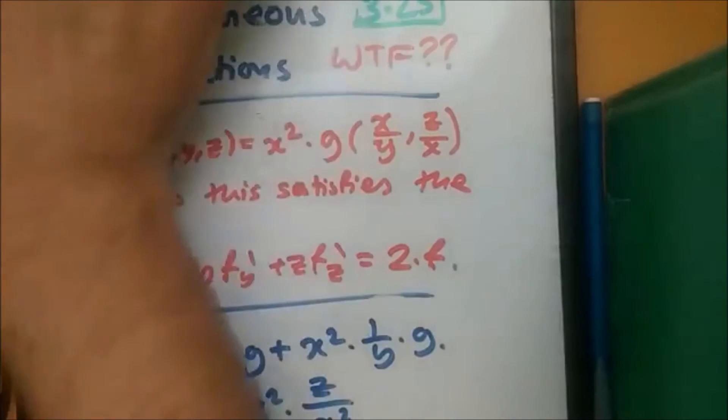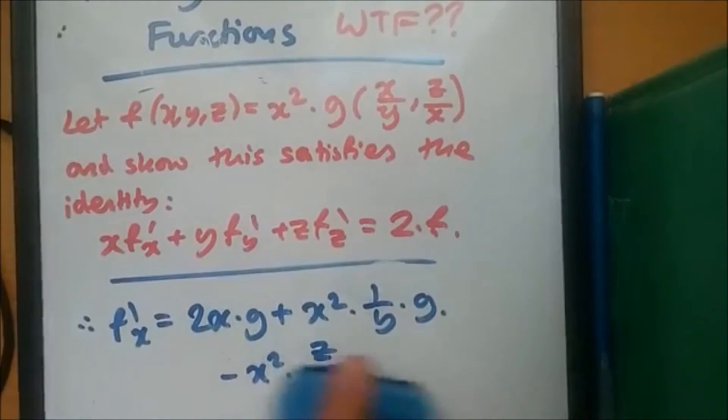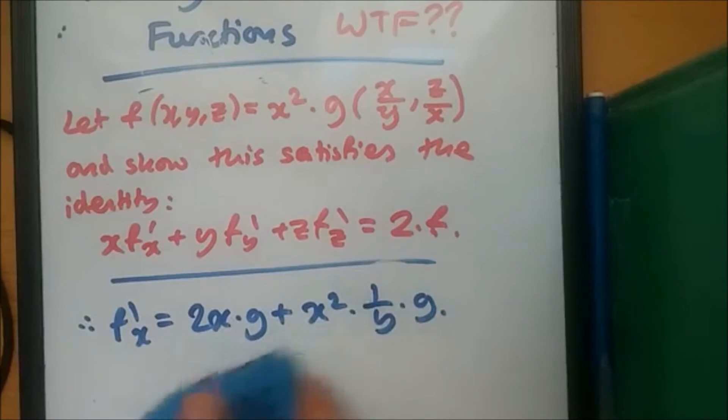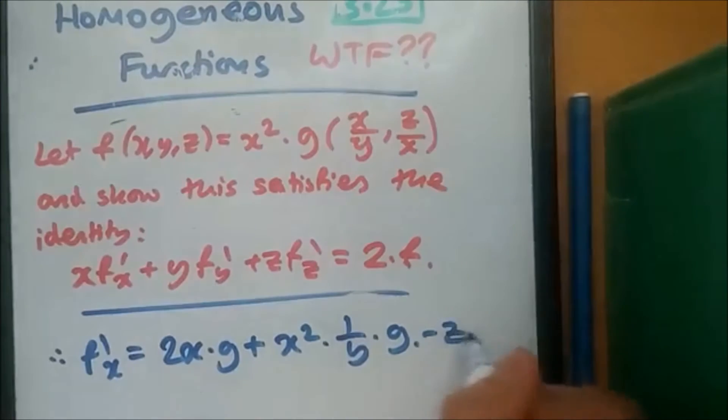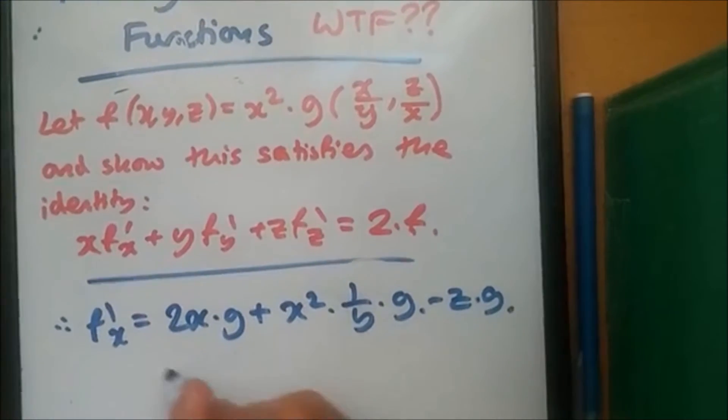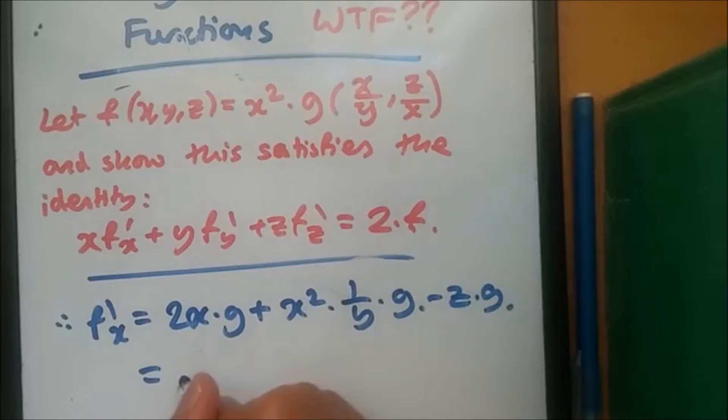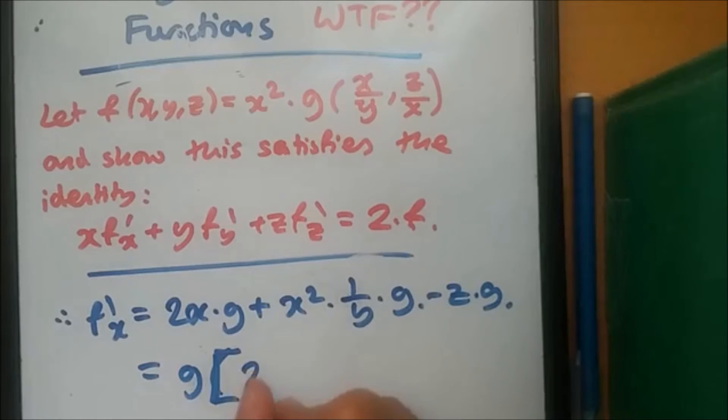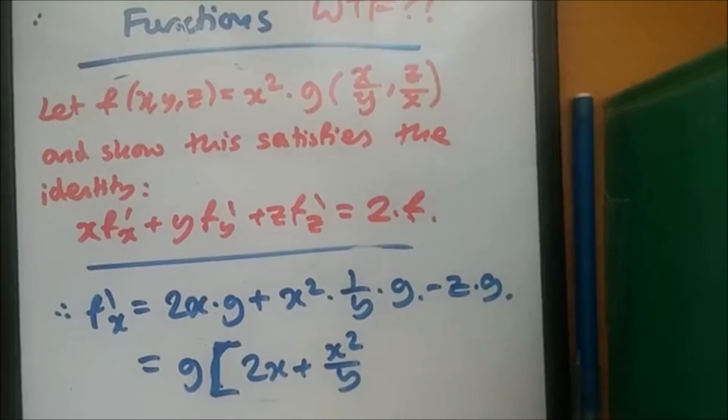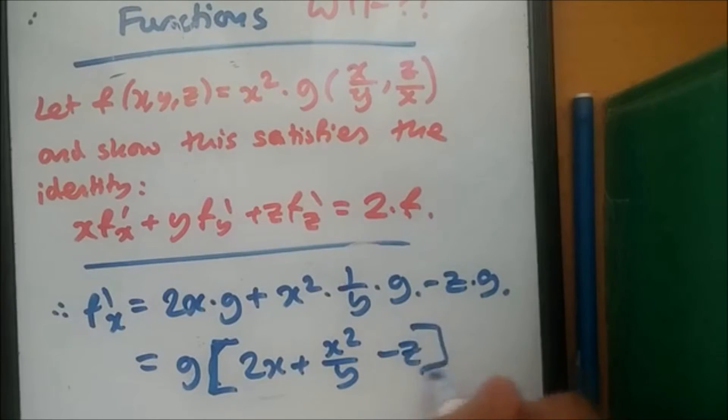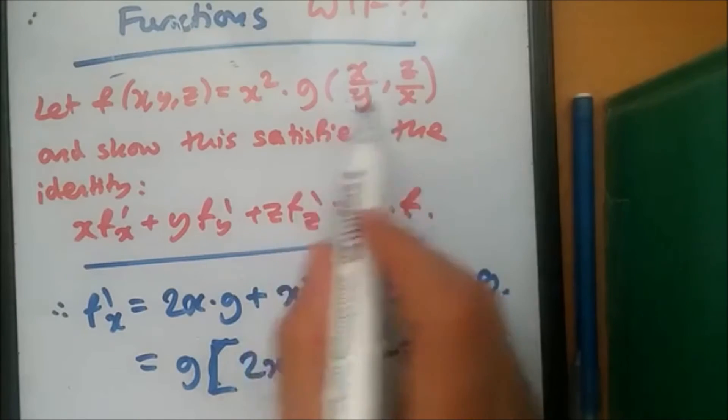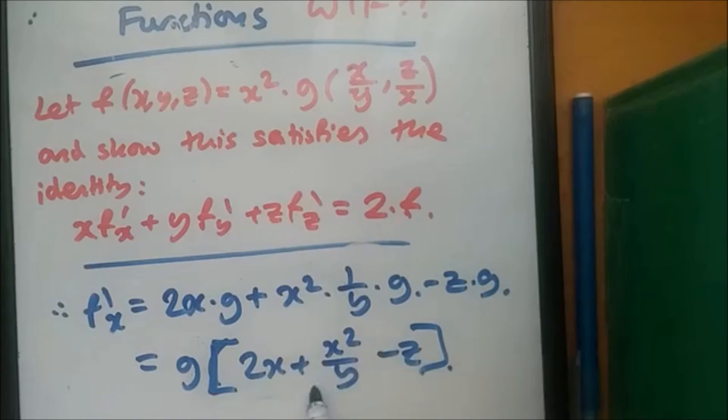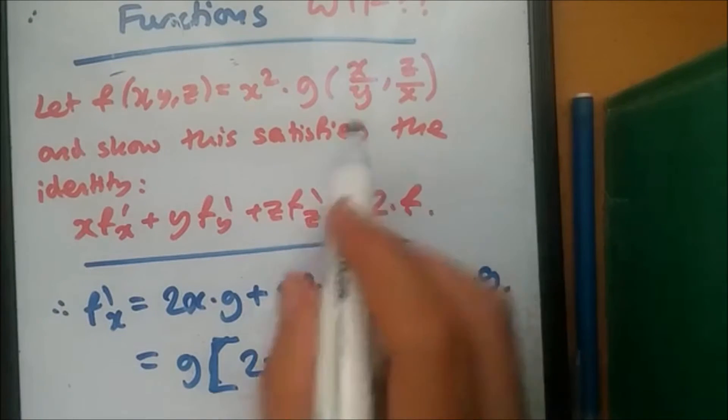And notice that these two cancel out. So really, this entire equation is just minus z times g. And simplifying all this, we just factorize g out to be g times 2x plus x squared over y, collecting terms, minus z. So remember, this is g times this variable. It's not g in a bracket. So it's g times all of this. And that's it. That's how you do the derivative for this function.